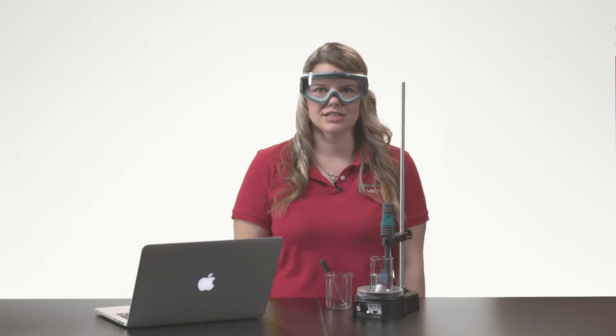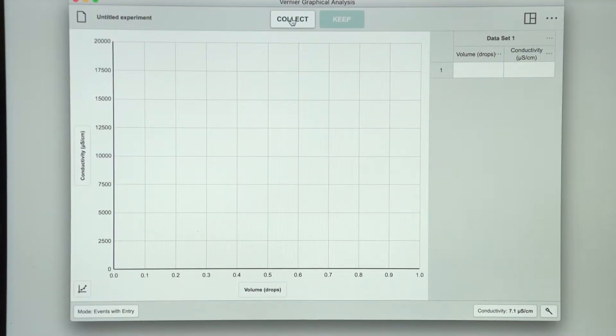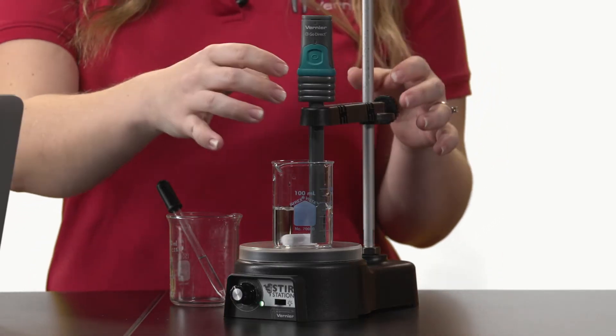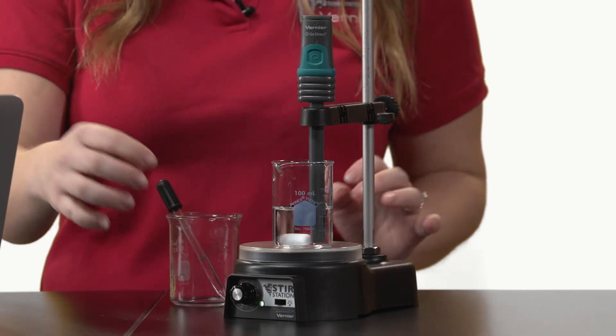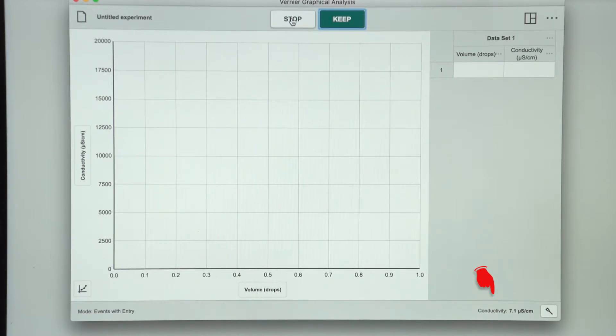I am now ready to start data by pressing the Collect button. No data points will be recorded until I press Keep. My conductivity probe is currently in distilled water and my live conductivity reading is here and stable. I want to take a zero data point, so I will go ahead and press Keep.